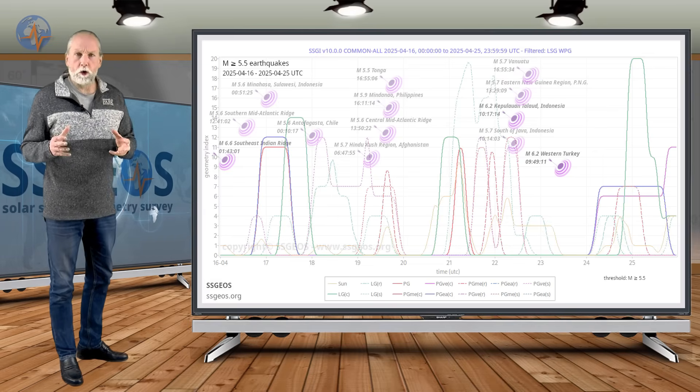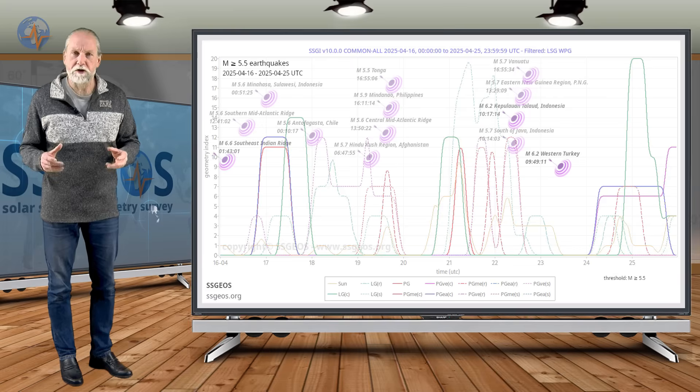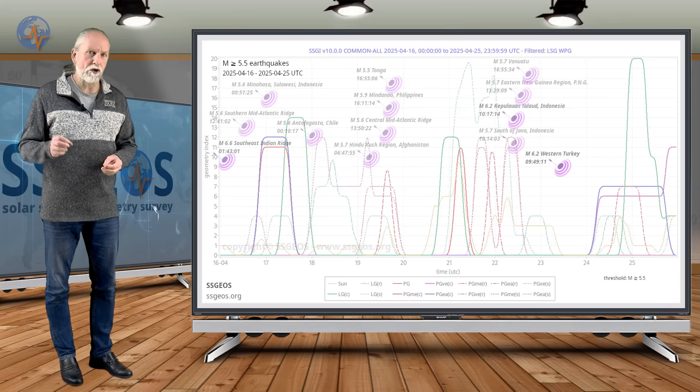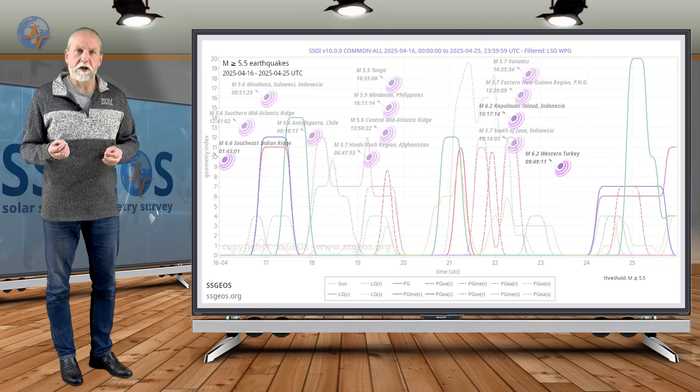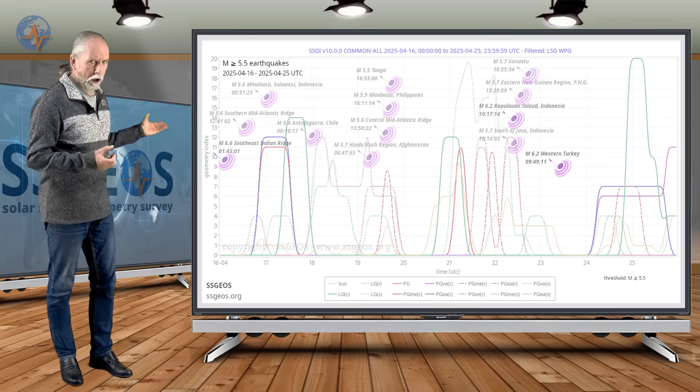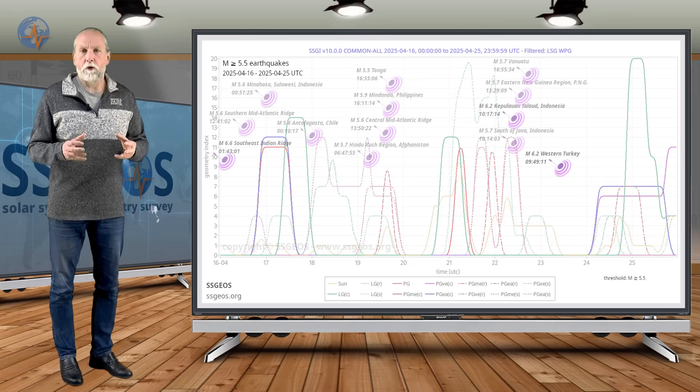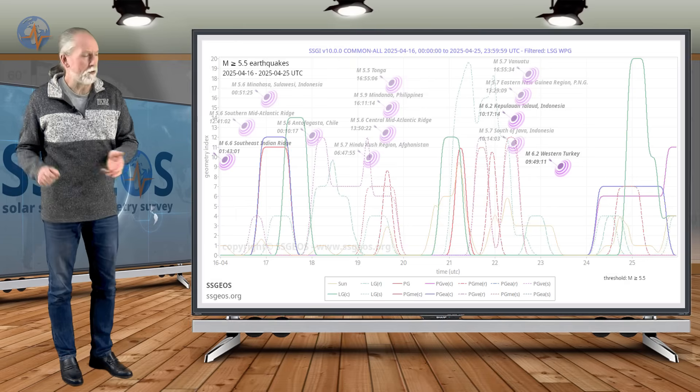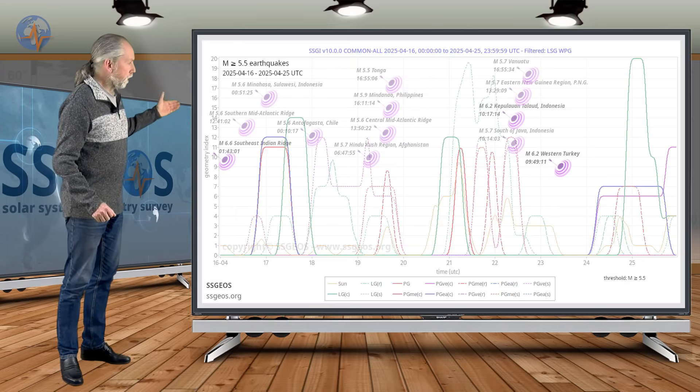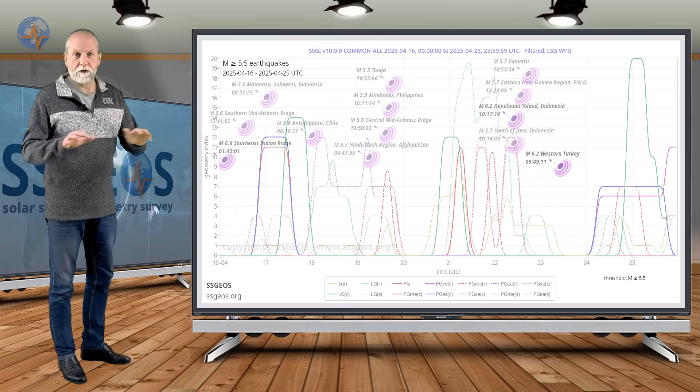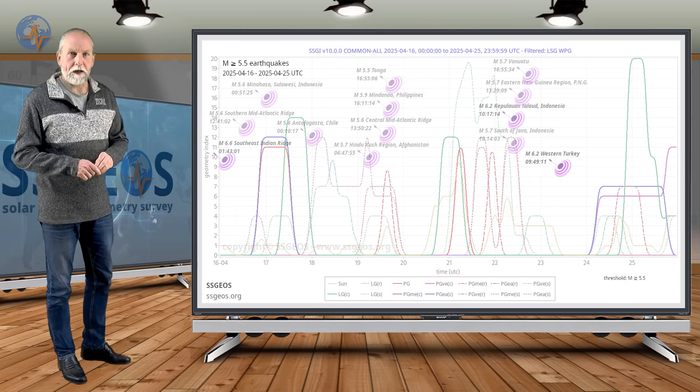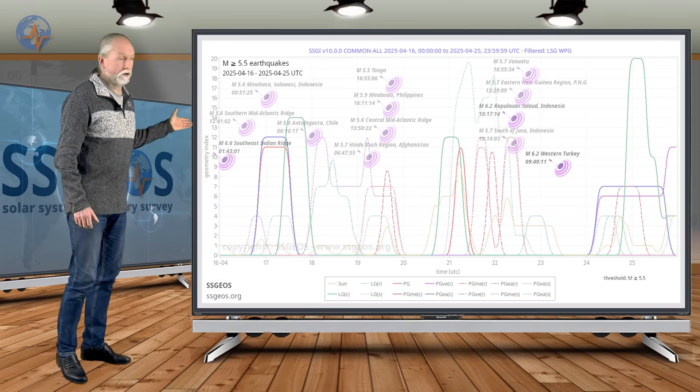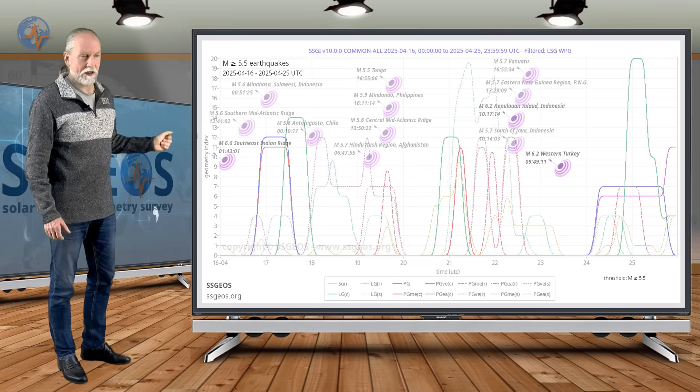Remember, stronger earthquakes tend to occur in clusters. These are the typical temporal clusters, not to confuse with spatial clusters. Spatial clusters is a clustering and swarming of earthquakes in a single area, but temporal clustering without the spatial component, that is the typical clustering of stronger earthquakes in various locations across the planet. And that's what we emphasize on our SGI graphs every time, because it happens most of the time.